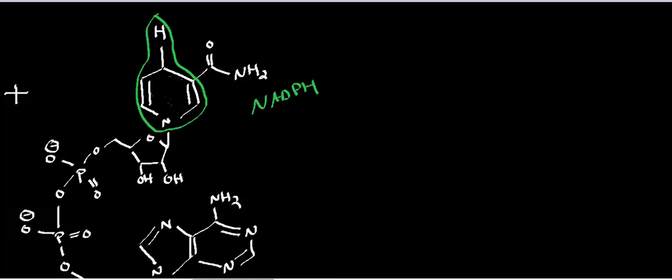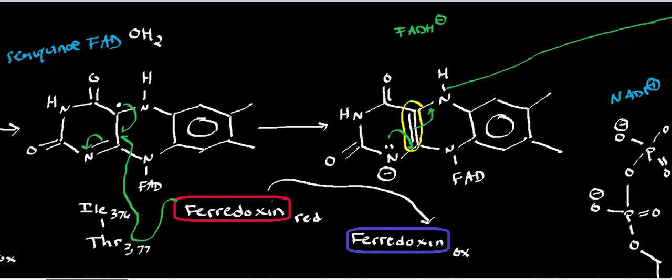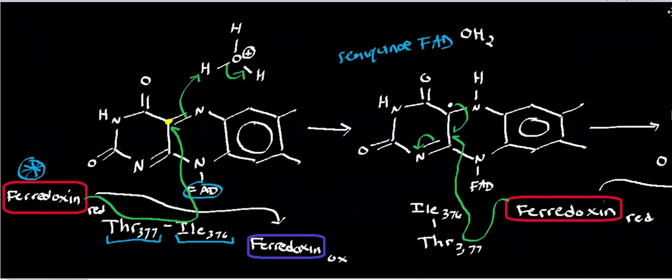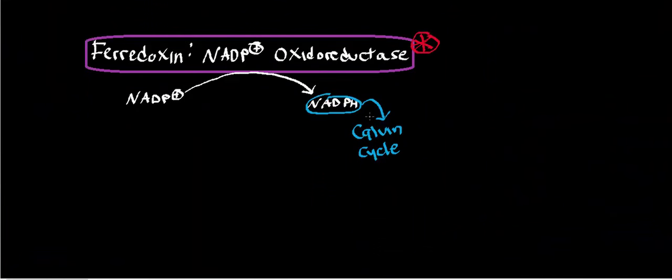The NADPH created here is used ultimately in the Calvin cycle, and that's part of the mechanism by which the plant synthesizes precursors to make glucose. This process of ferredoxin feeding its electrons into ferredoxin NADP+ oxidoreductase is called non-cyclic electron flow.